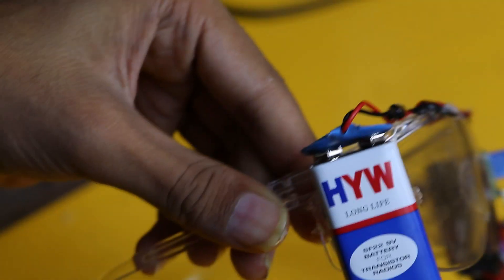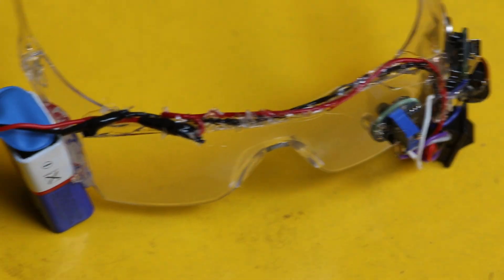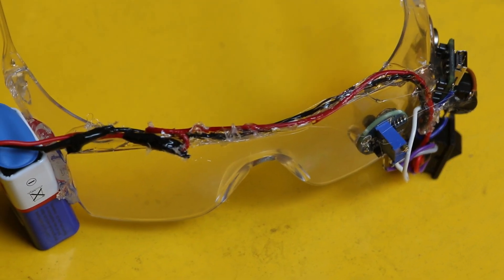After completion of all the soldering and the glue gun process, this is how our project anti-sleep detector is looking like. You can see the battery, the eye blink sensor, buzzer, vibration motor, Arduino Nano, SPST switch - everything we have fit on the goggle with the help of glue gun.